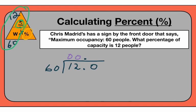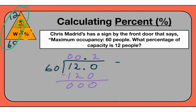Now we just set this up and divide — it's actually not going to be that tricky. 60 does not go into 1, of course. 60 doesn't go into 12 since 12 is smaller than 60. However, 60 does go into 120, and it goes in evenly two times — 60 times 2 is exactly 120. So I put 120, and when you subtract, the answer is 0.2.